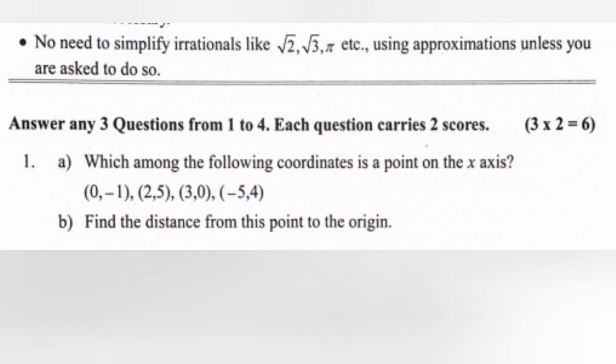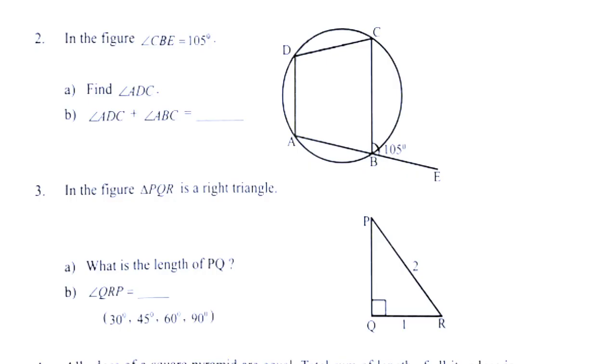Question 1a: Which among the following coordinates is a point on the x-axis? Options: (0, -1), (2, 5), (3, 0), (-5, 4). Answer: (3, 0). Question 1b: Find the distance from this point to the origin. Answer: 3 units.